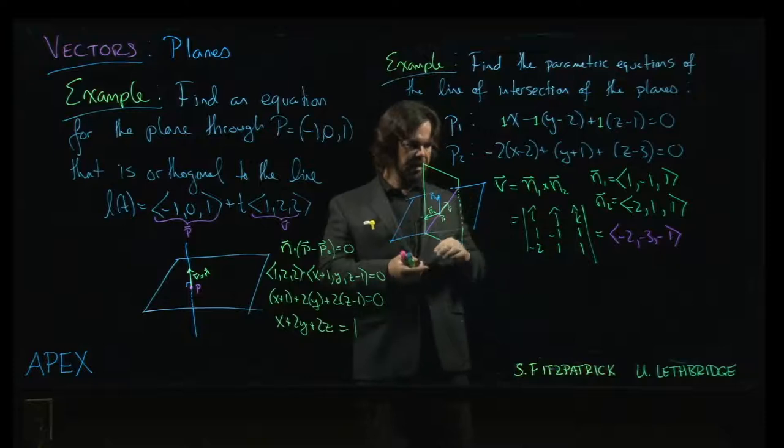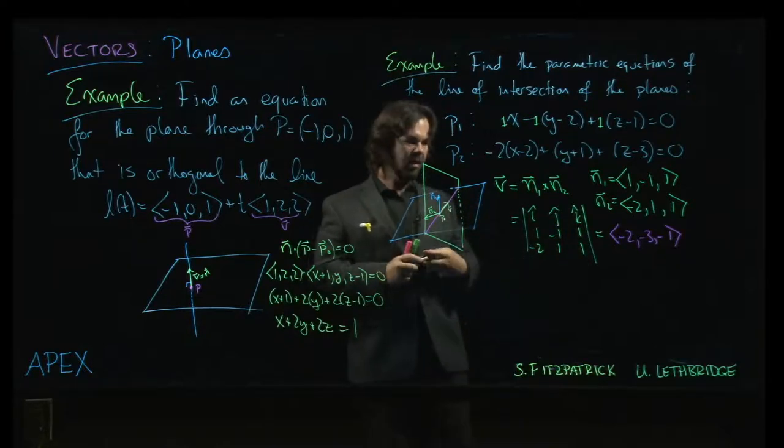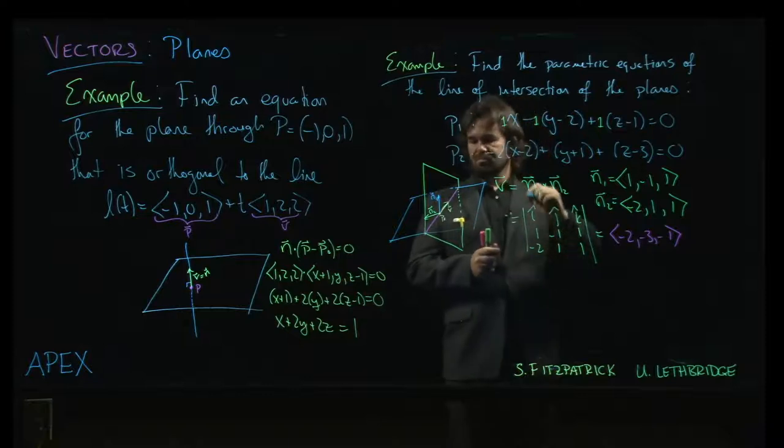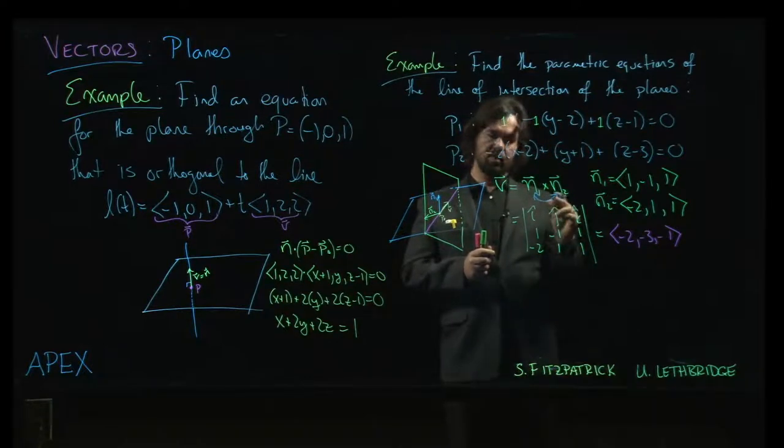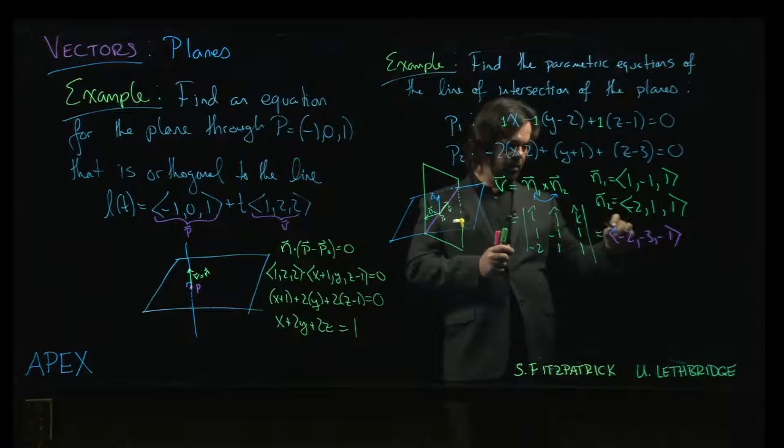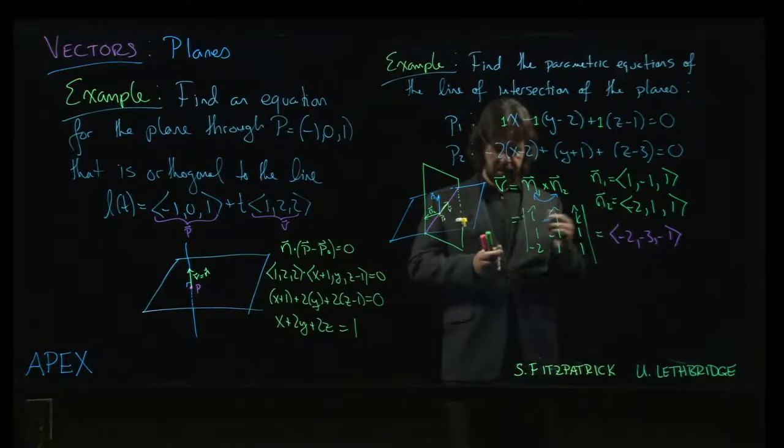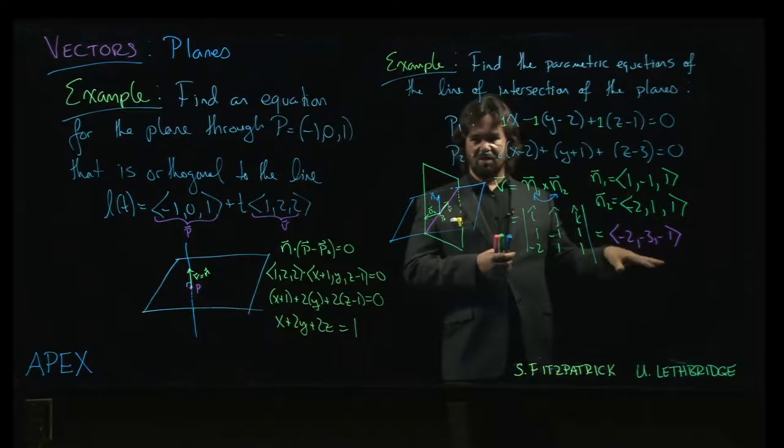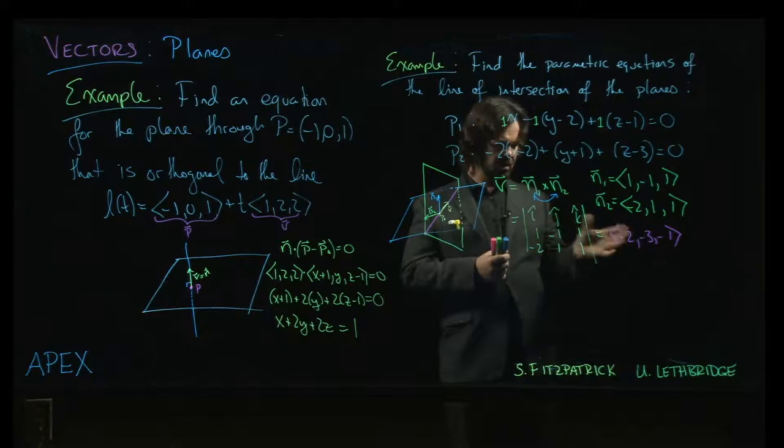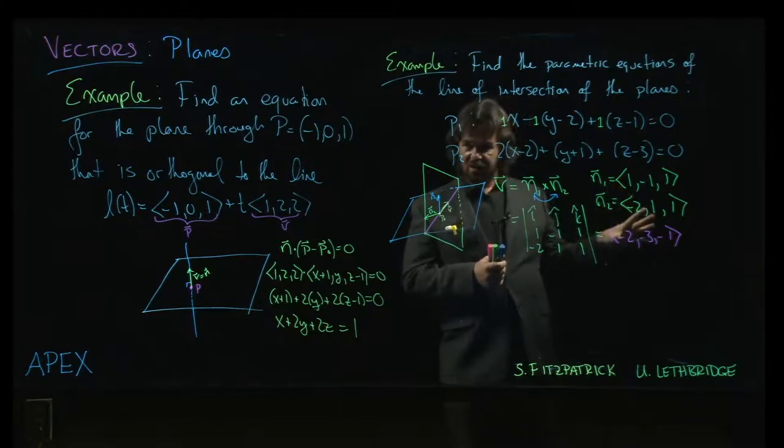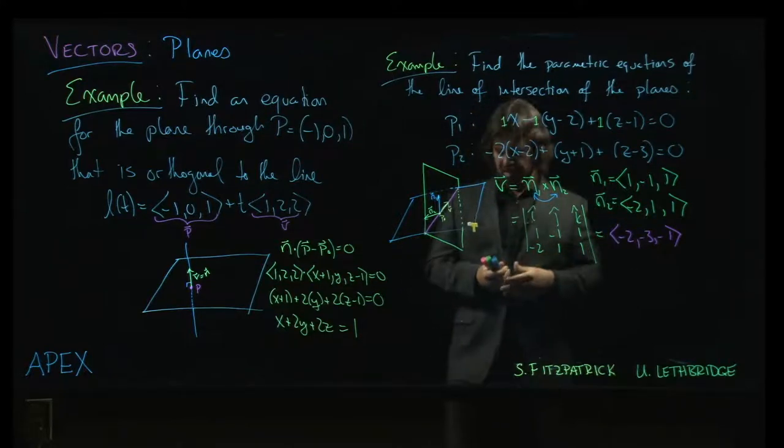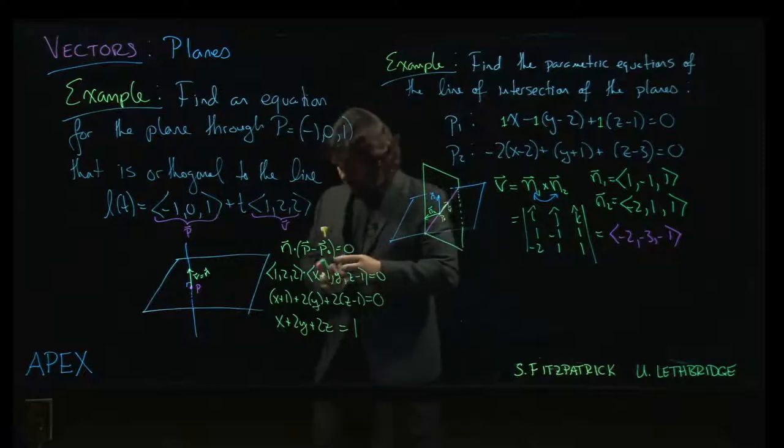And by the way, if you want to, I'll leave it as is. If you don't like all those minus signs, you could just as well have done n2 cross with n1, and then you would get plus 2, plus 3, plus 1 at the end. You can always change the sign on, if you're just looking for a direction, like a normal vector or direction vector, you can always change the sign. It's still going to be a valid solution. So if you don't like the minus signs, just flip the sign.